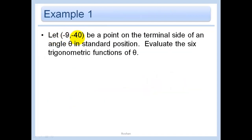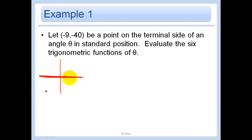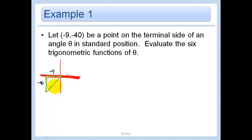So now let negative 9, negative 40 be a point on the terminal side of an angle in standard position. That means negative 9, negative 40 is over here. The triangle we make always needs to come back to the x-axis — that's super important. The angle always comes from the origin. Let x be negative 9 and y be negative 40. Put the negative numbers so that the signs of all your trigonometric functions are right.